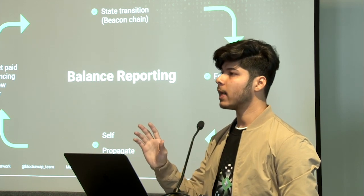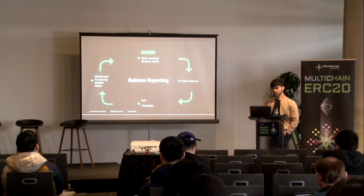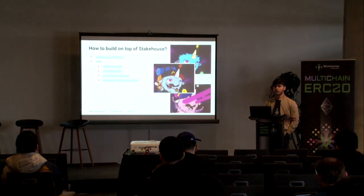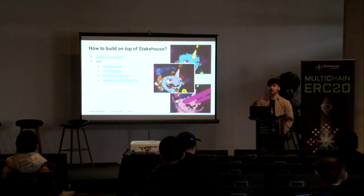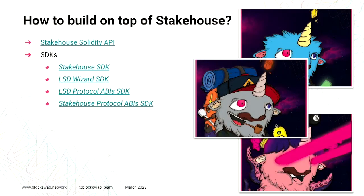They keep the balance but they are also passive. After this, you will be able to mint derivatives, because as long as you keep on balance reporting, the Stake House contracts know that your validator has been active and earning rewards or being slashed. So the contracts take note of that.